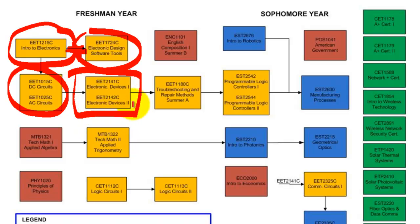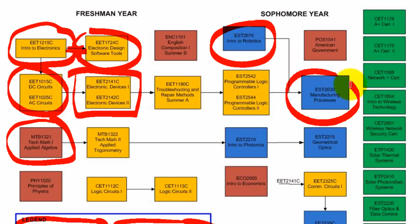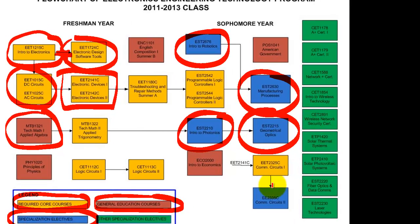The courses with yellow background are major core courses for the Electronics program — these are major required courses. The courses in reddish color are general education courses, and you must have all of those. The courses in blue are typically offered in the second year and are major field specialization electives. If you're going for the Robotics and Photonics Institute, you should take these blue courses.